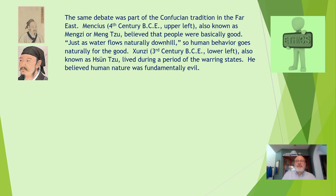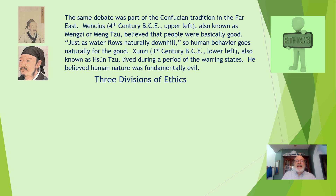The same debate was part of the Confucian tradition in the Far East. Mencius (4th century BCE) believed that people were basically good — just as water flows naturally downward, so human behavior goes naturally toward the good. He used the example of someone rescuing a child who fell into a well as an expression of human nature. Xunzi (3rd century BCE), also known as Sun Tzu, lived during the period of the warring states and believed human nature was fundamentally evil, requiring laws to keep people under control. It's a debate that goes on today.